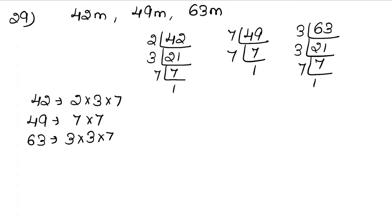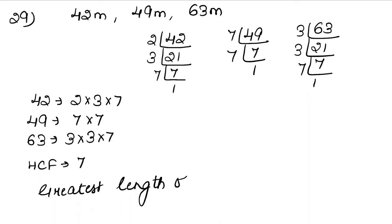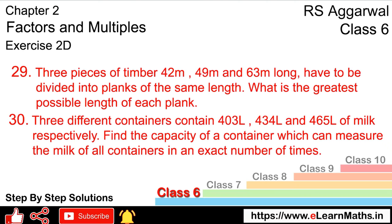Greatest length means HCF. For HCF, we take what is common. Here only 7 is common, so HCF = 7. Therefore the greatest length of each plank is 7 meters. That's the answer. Now let's do question number 30.